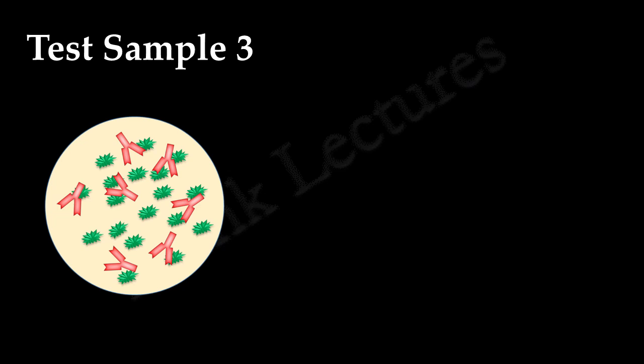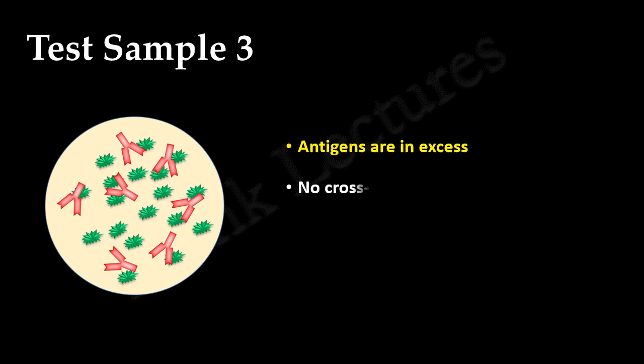Let's now look at the third test sample. In this case, antigen is in excess. Again no cross linking occurs. This is because now antibodies are insufficient. The antigen-antibody complexes formed are small and soluble. Therefore no precipitation occurs.